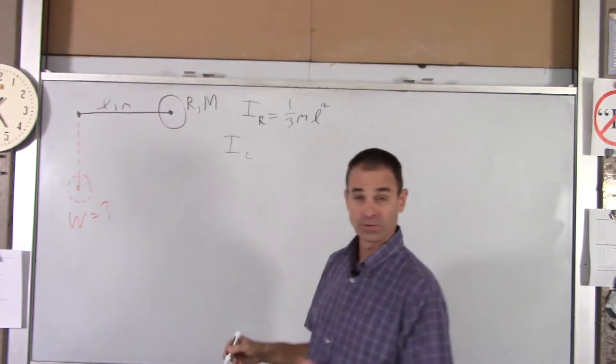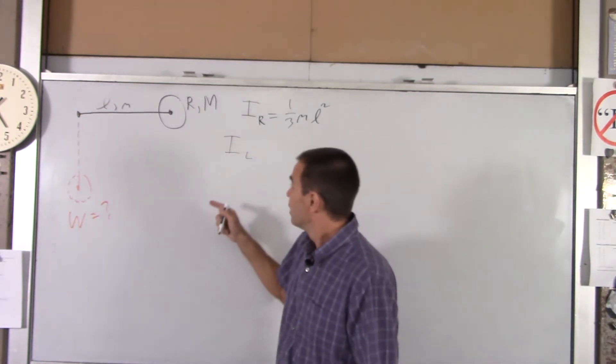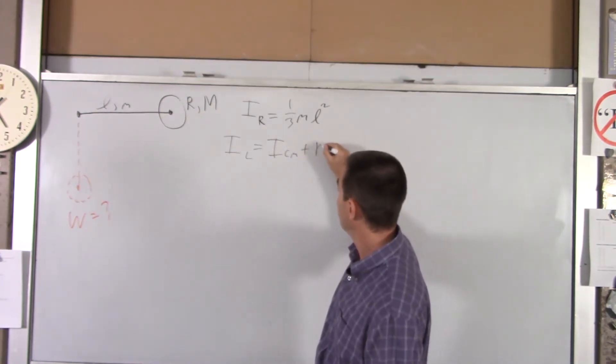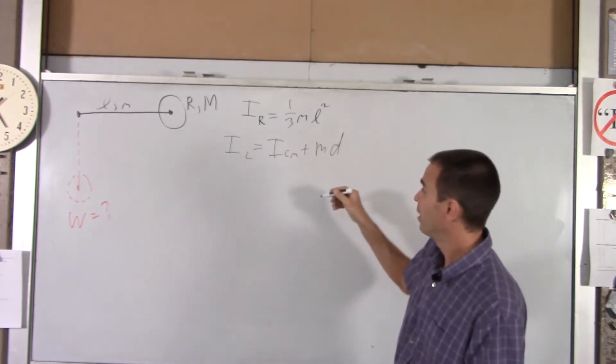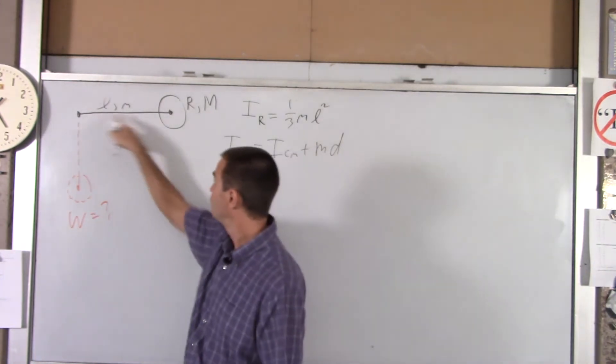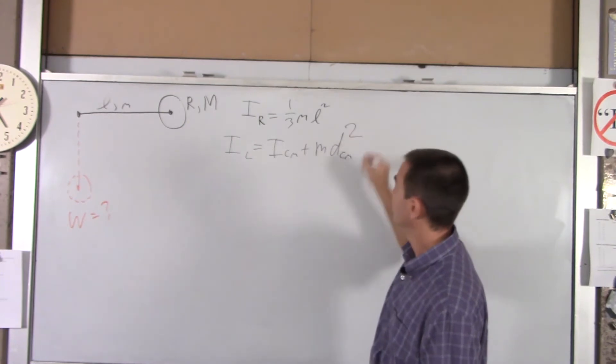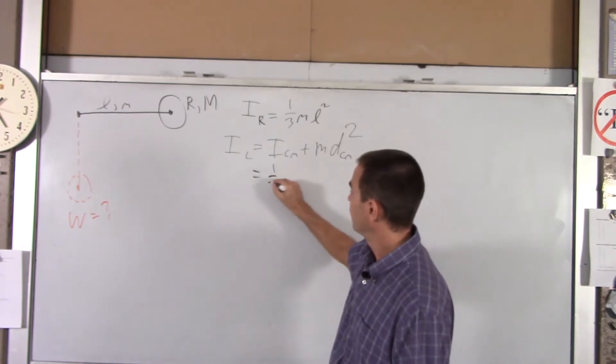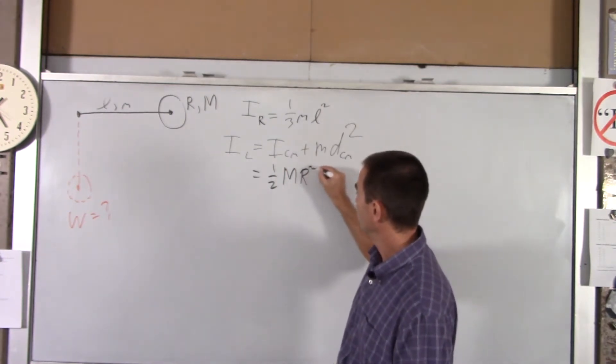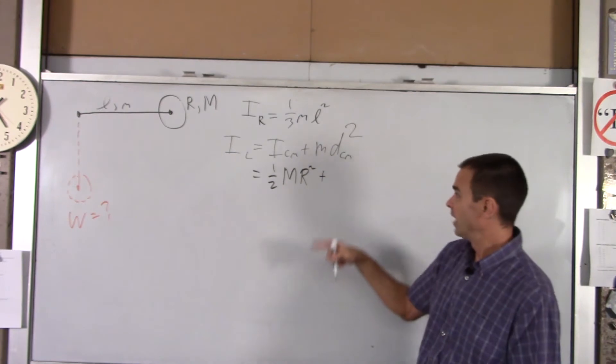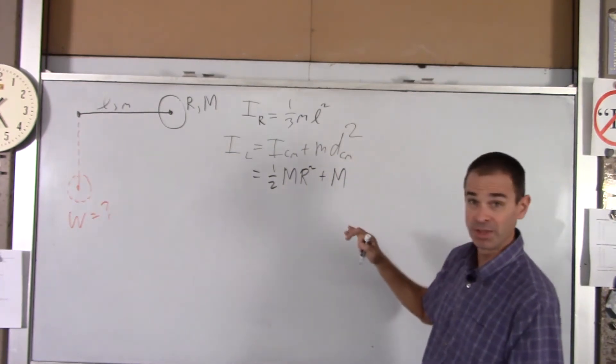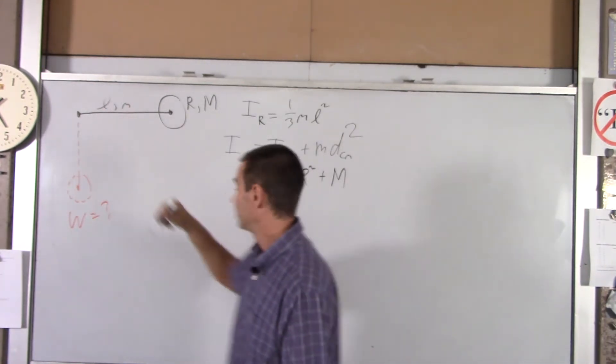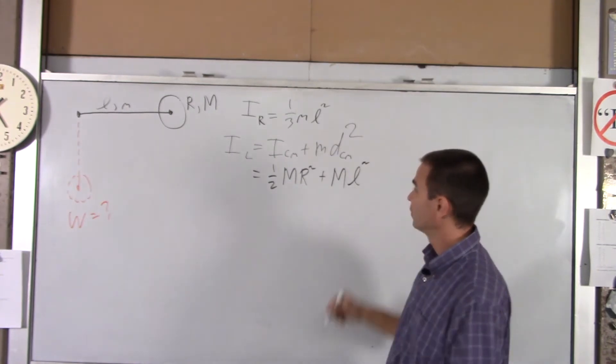For the lollipop, we're going to do its moment of inertia about center of mass plus its mass times the distance from the pivot point to its center of mass squared. For a solid disk, this is one-half Mr squared, and then we use this part which is M. What's DCM? The distance from here to here is just L, so you get L squared.